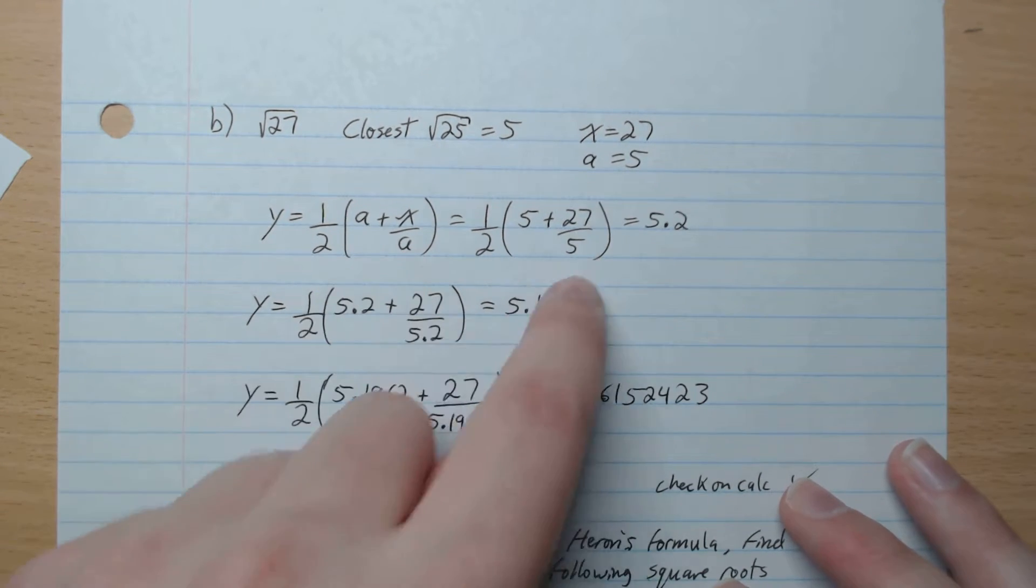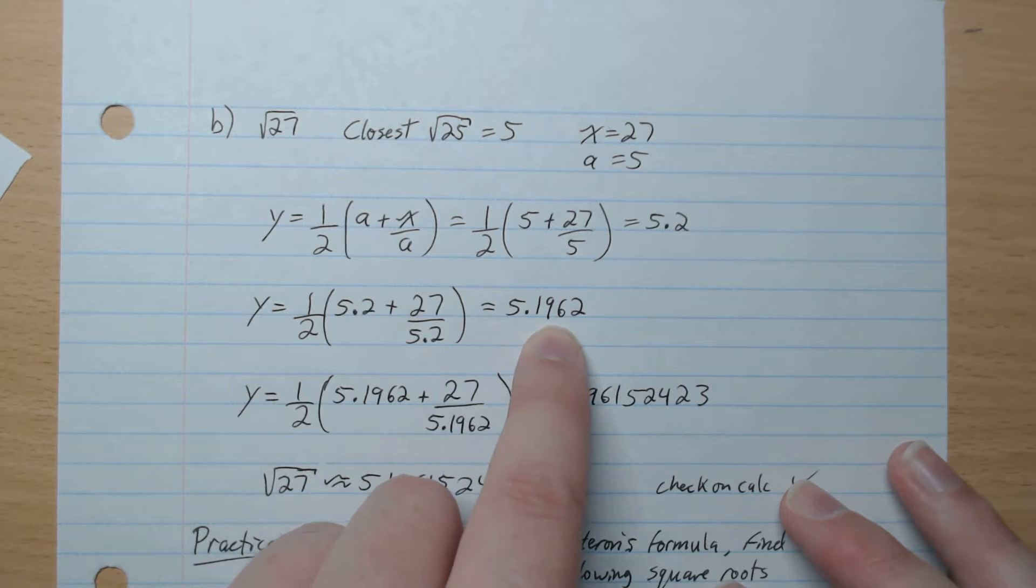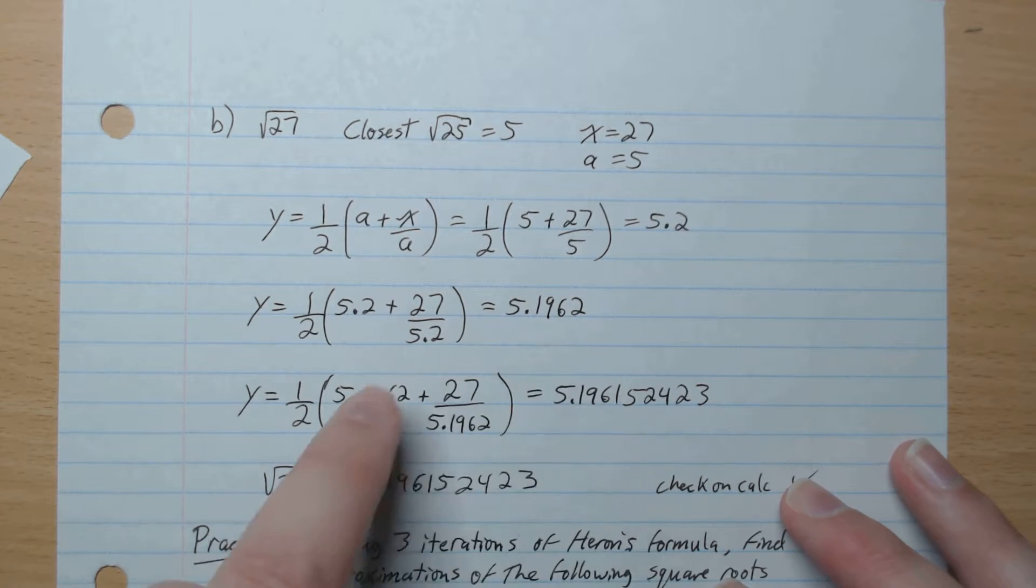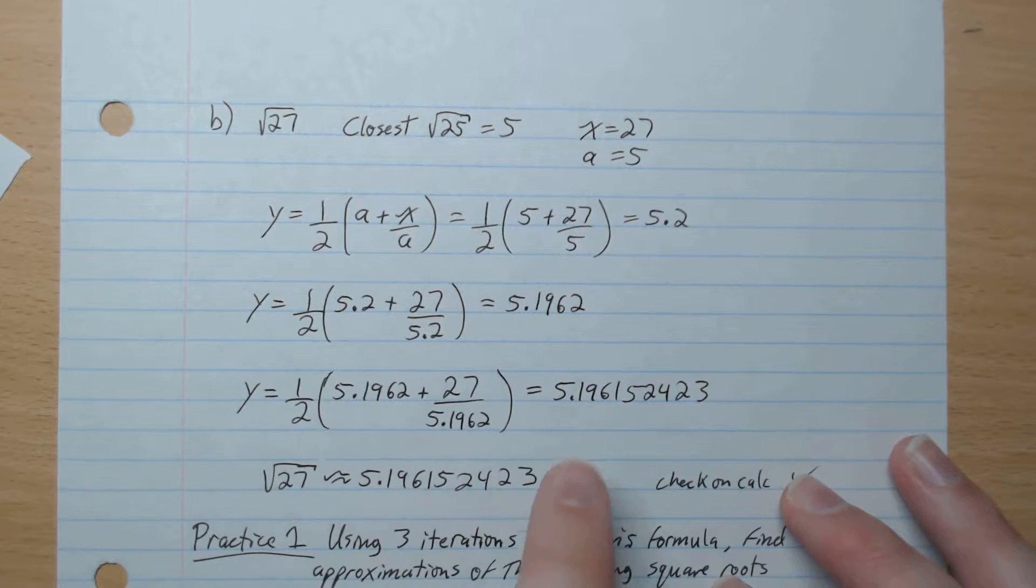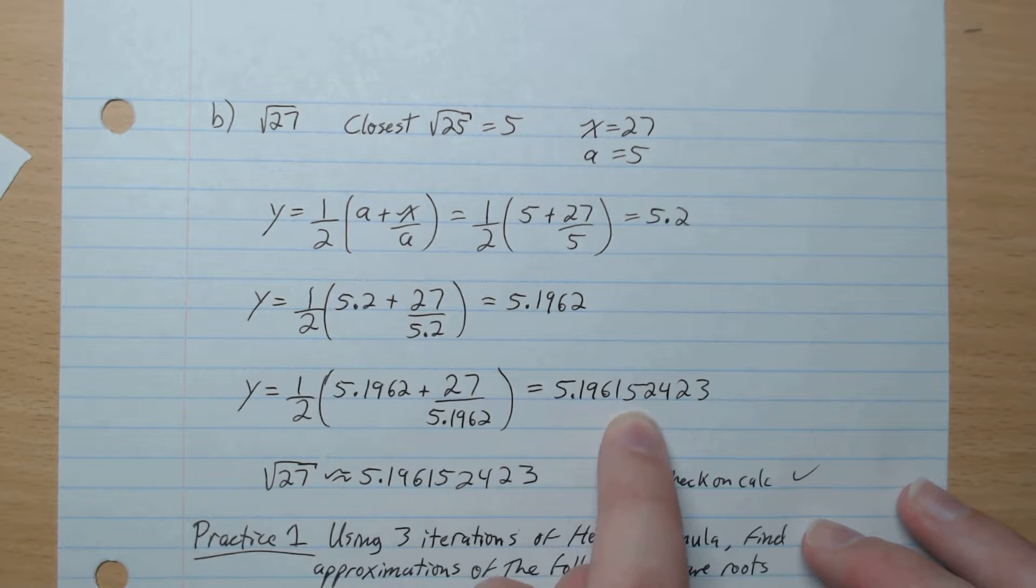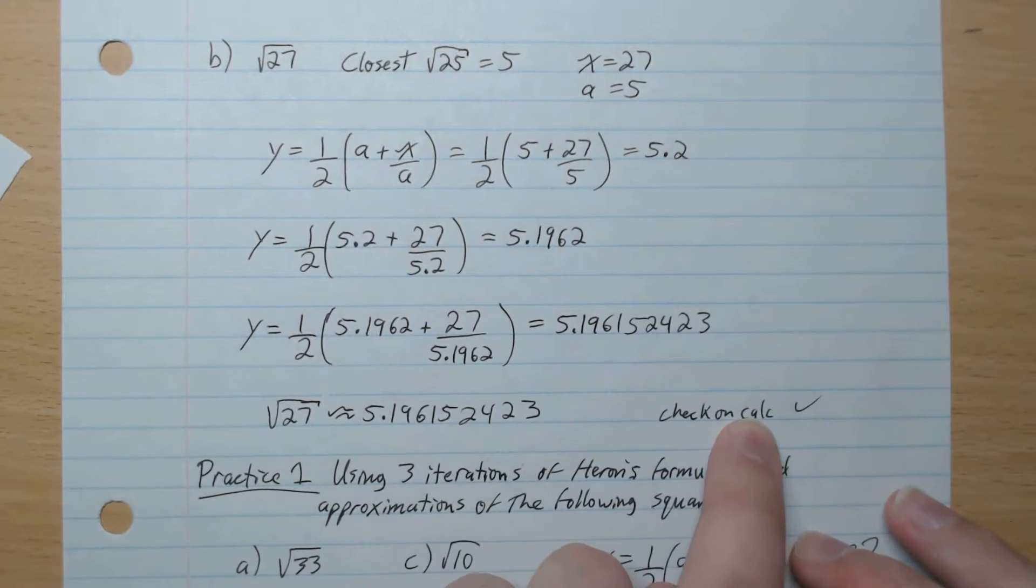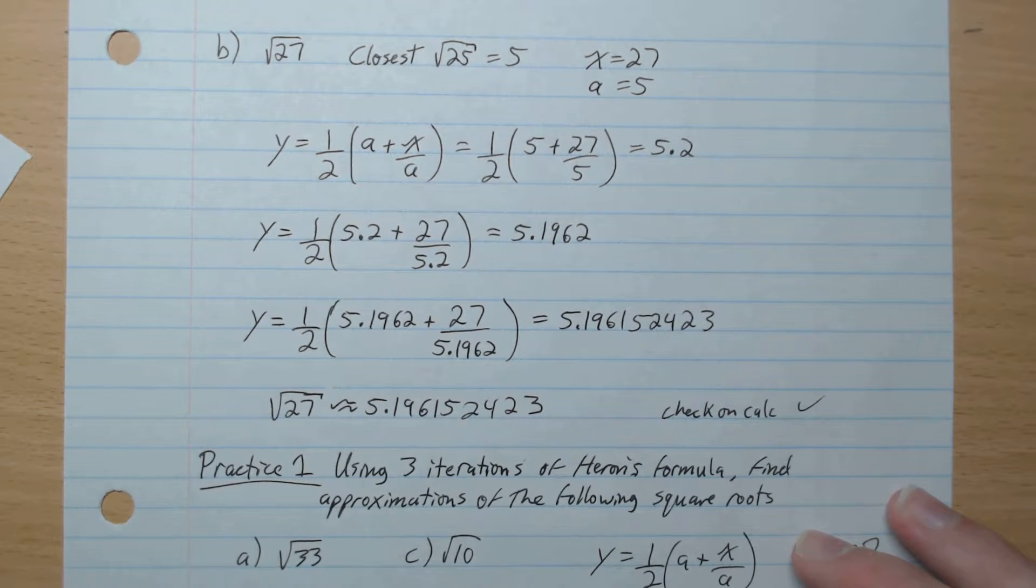So we do a second iteration, plug in 5.2, we get 5.1962. Then we plug that in again, and we get 5.196152423. And you check on the calculator, and you get exactly that.